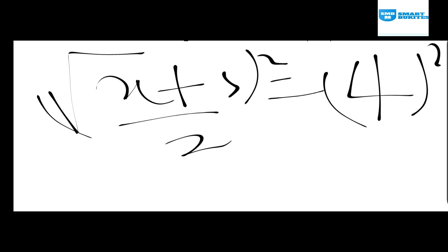You know the rule of square square here go with this square and it becomes x plus 5 is equal to 4 square which is 16. So 4 square is 16. Now we have x plus 5 over 2 is equal to 16.